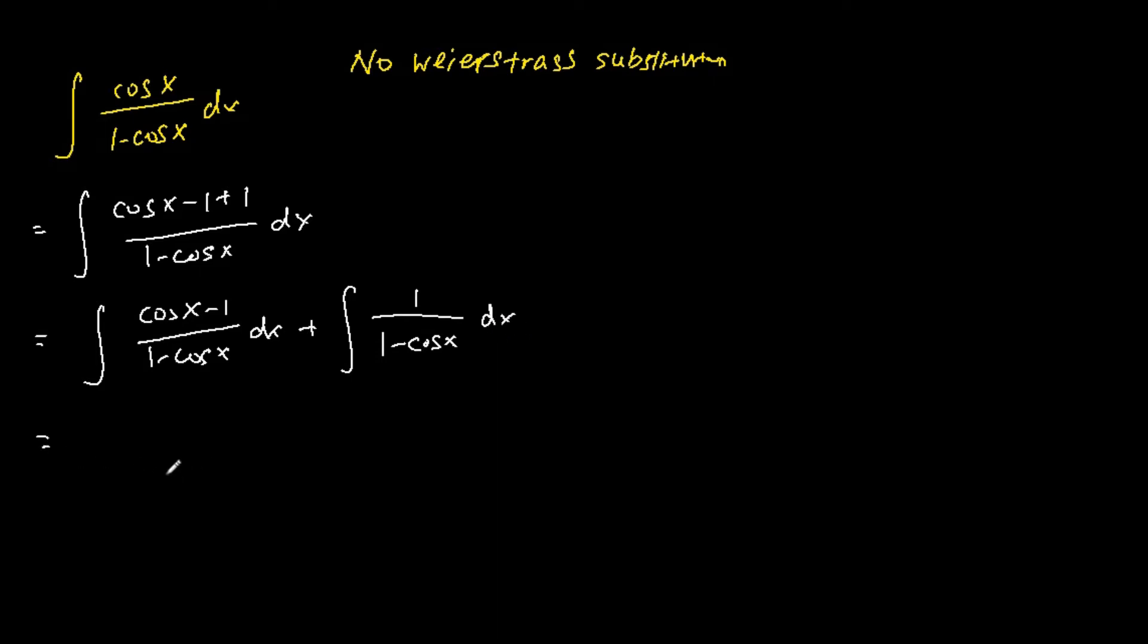For the first integral, this is the same as subtracting away the integral of 1 minus cosine x over 1 minus cosine x dx plus the integral of 1 over 1 minus cosine x dx.